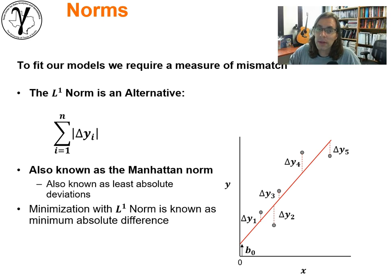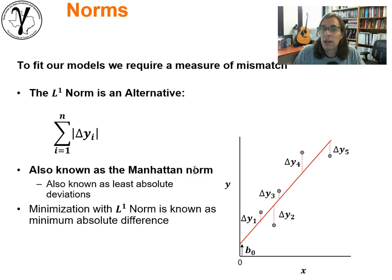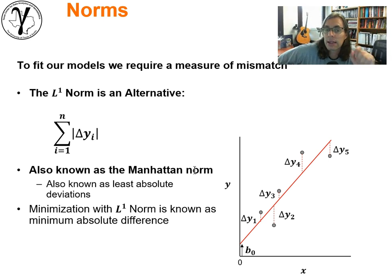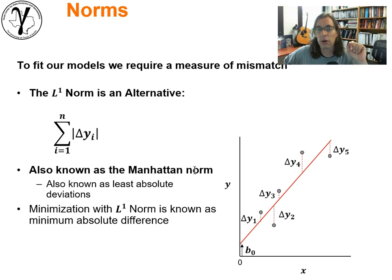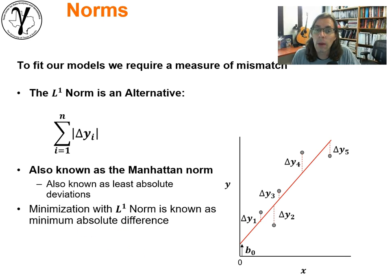The L1 norm is an alternative. Instead of squaring, we could take the absolute value of all the error components — giving us the sum of absolutes. This is also known as the Manhattan norm. If you have a bunch of error terms and sum them like this, it's effectively like calculating distance when you live in a large city and you can't cross the blocks — you can only walk along x and y coordinates, you cannot go diagonal. That's why we'd call it Manhattan norm, or Manhattan distances. It's also known as least absolute deviations. Minimization with L1 norm is known as minimum absolute difference.